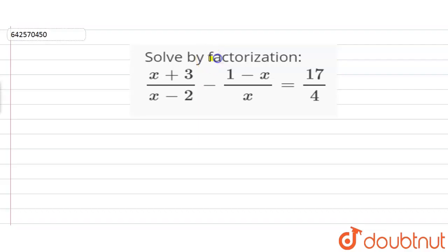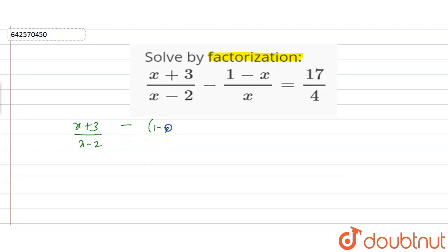So we have to solve by factorization. The equation given to us is: (x + 3)/(x - 2) minus (1 - x)/x is equal to 17/4.